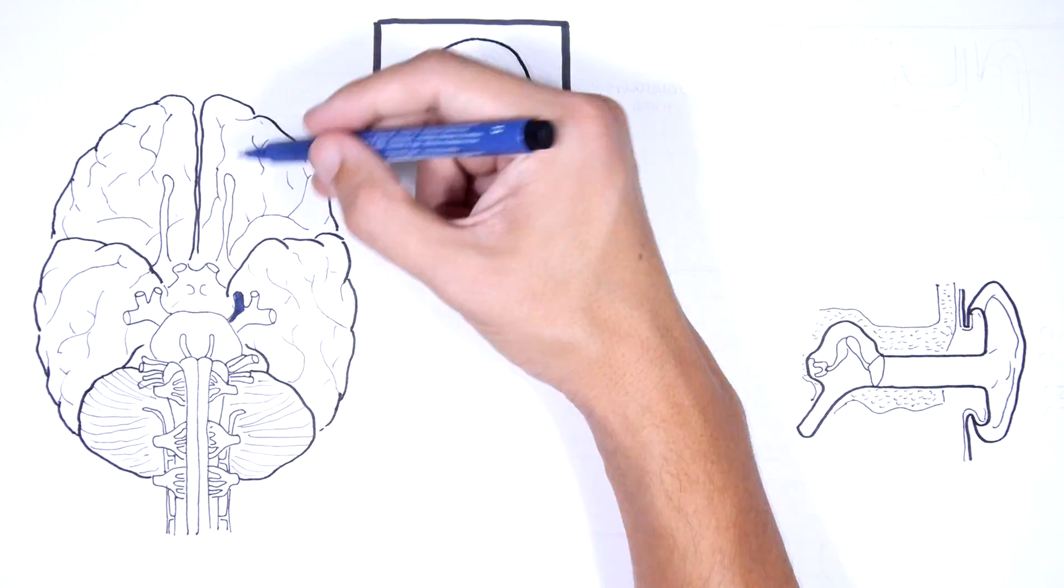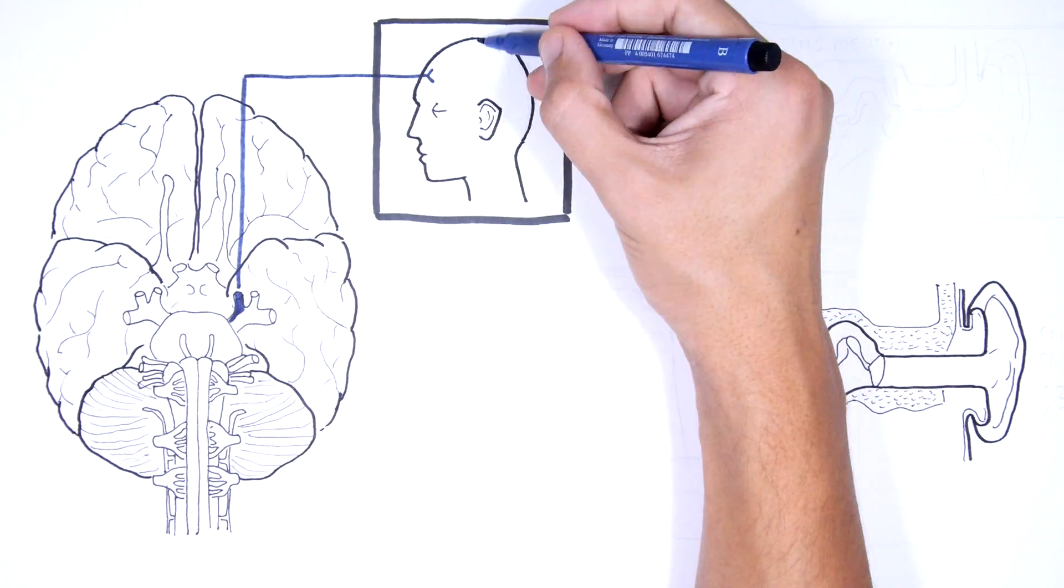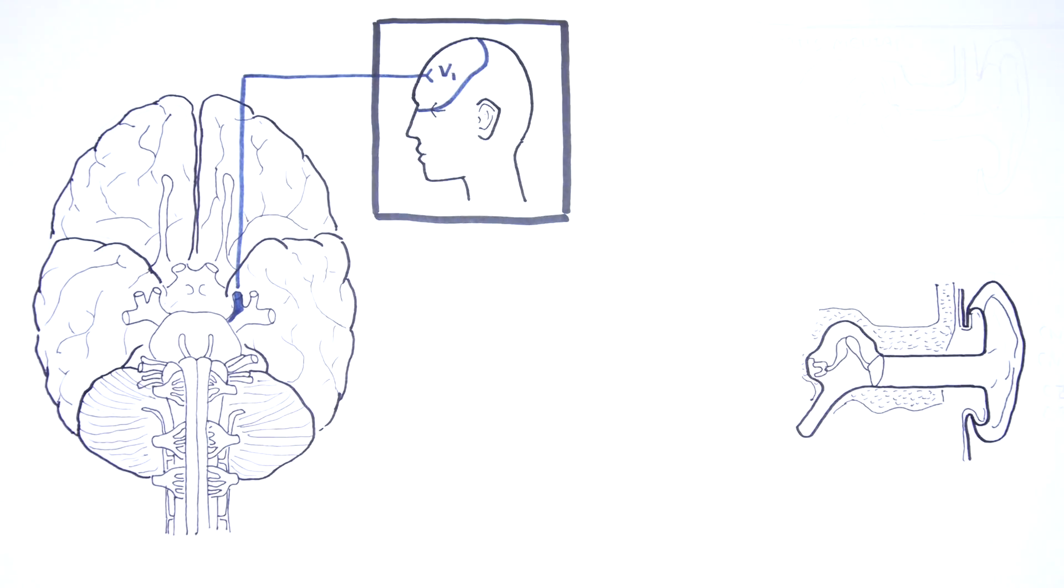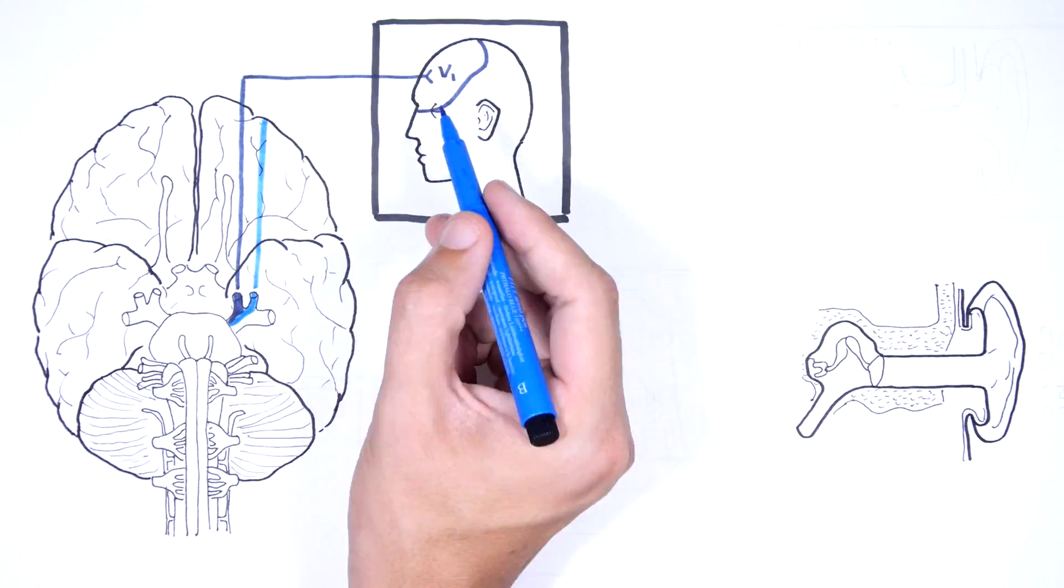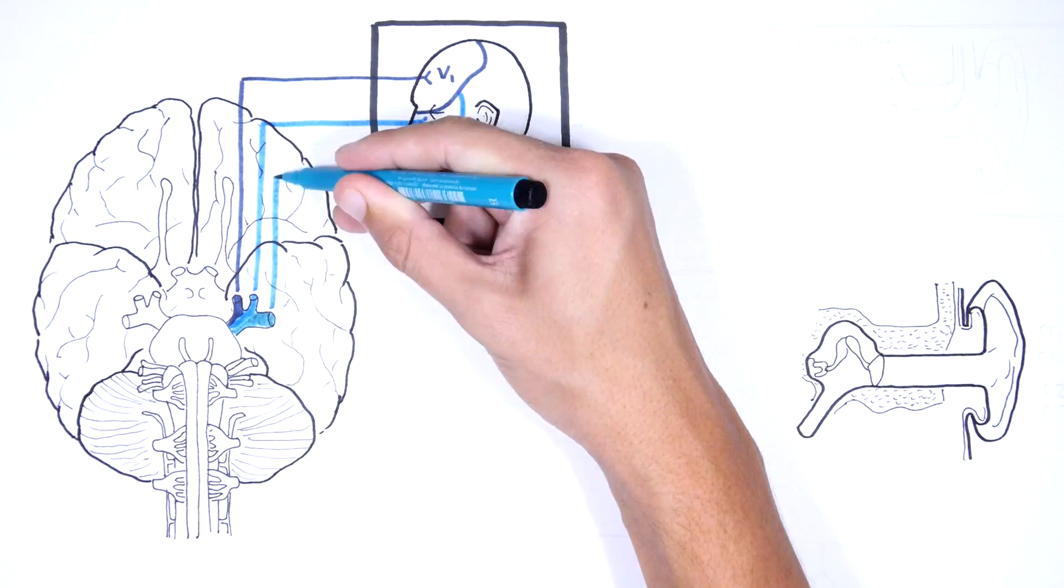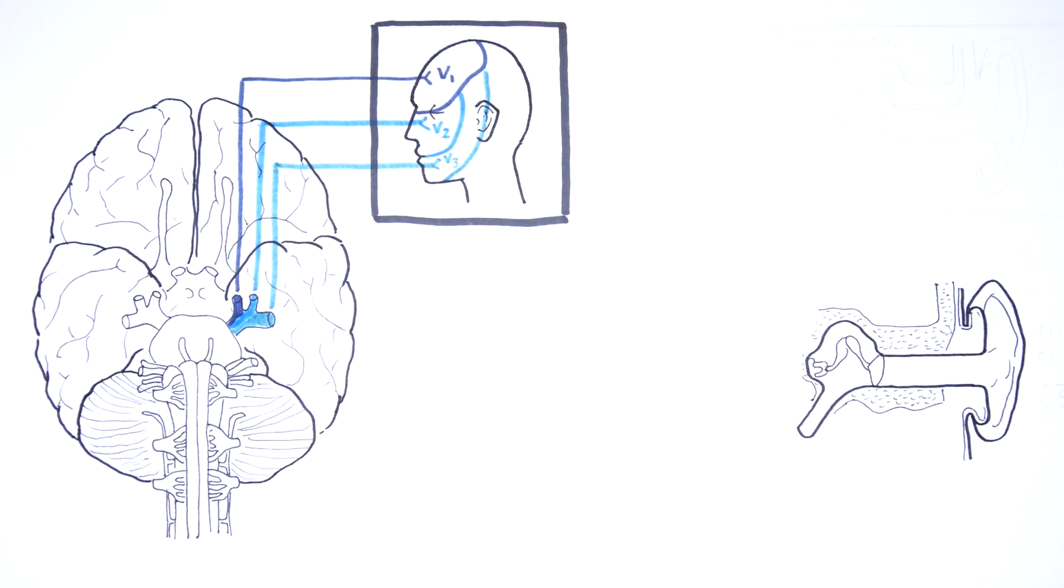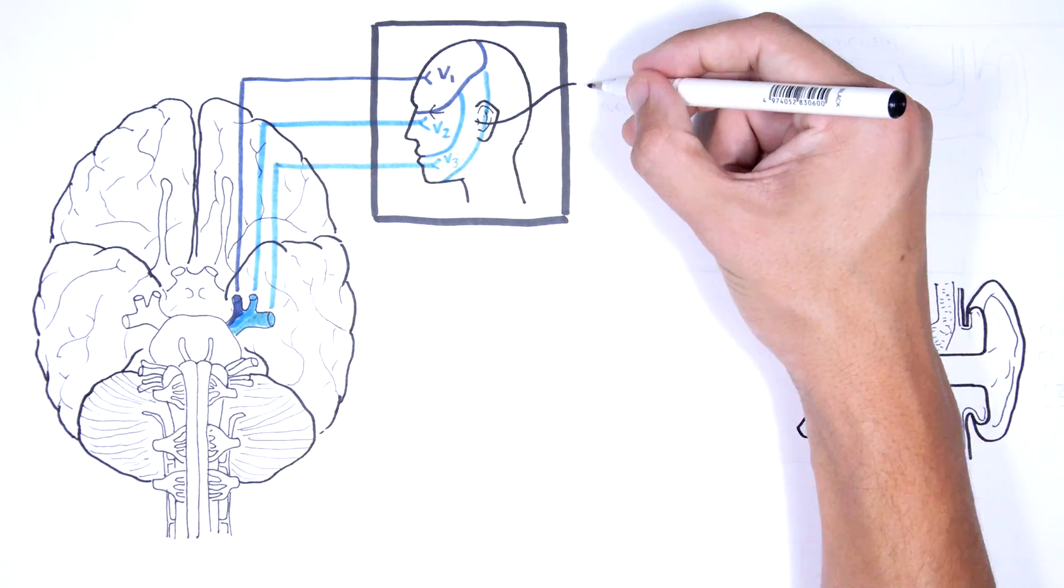The trigeminal nerve, which is cranial nerve number five, has three main branches and its role is for sensation of the face in a specific distribution depicted in this diagram. You have trigeminal branch one, trigeminal branch two and trigeminal branch three, abbreviated V1, V2, V3.